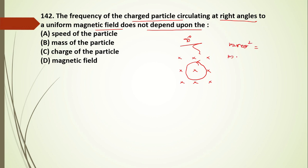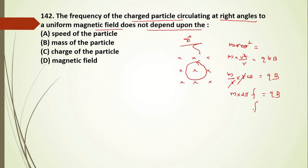Substituting omega = v/r, we get mω = qB. Writing omega as 2πf, the frequency is f = qB/(2πm). This shows the cyclotron frequency depends on charge q, magnetic field B, and mass m — but not on the speed of the particle. Therefore the frequency is independent of the speed.